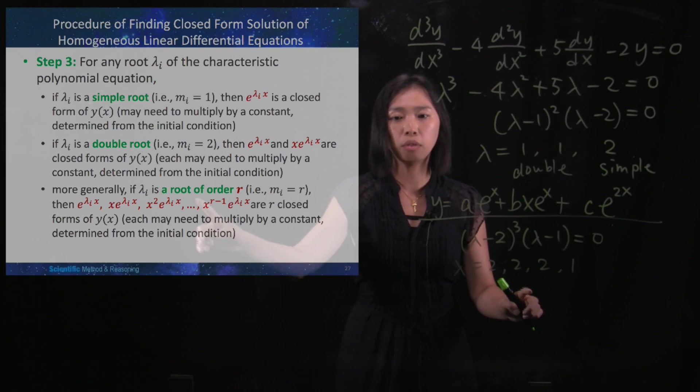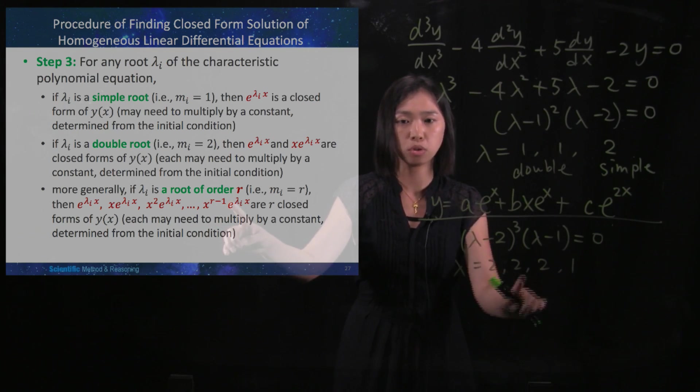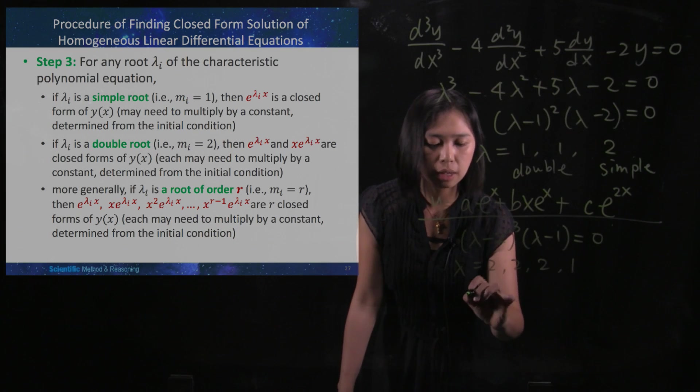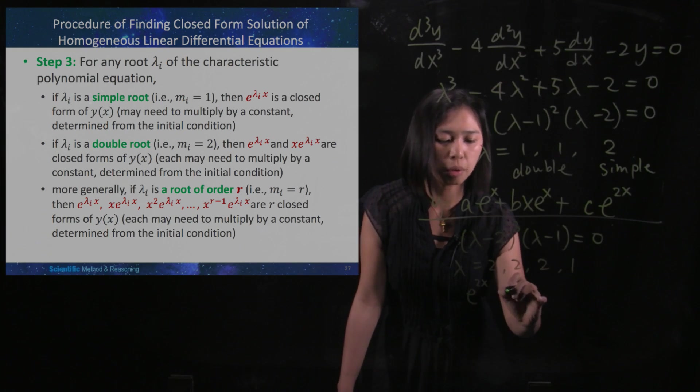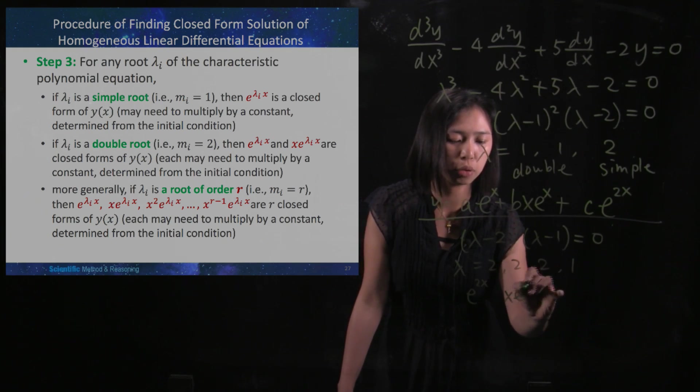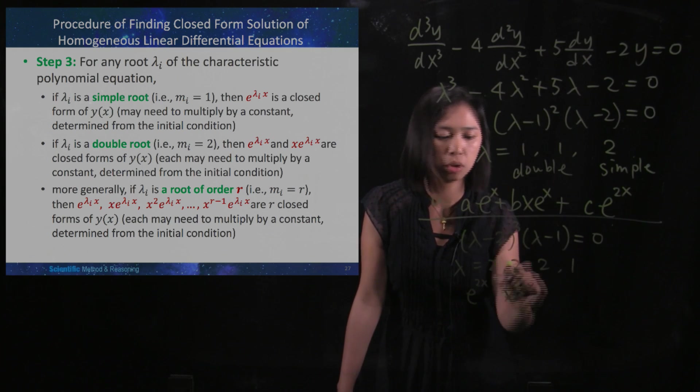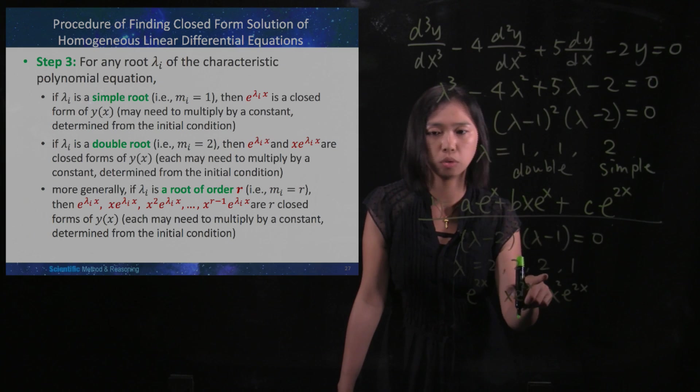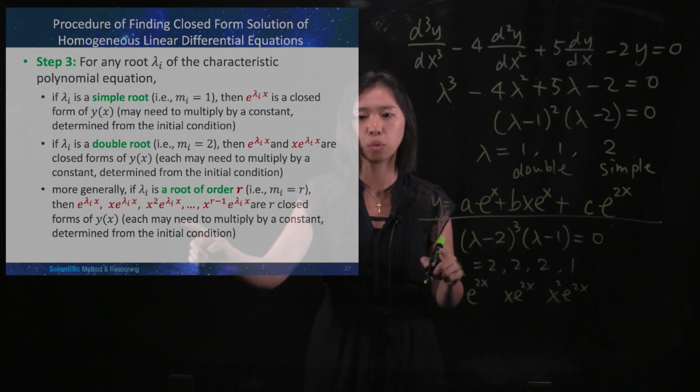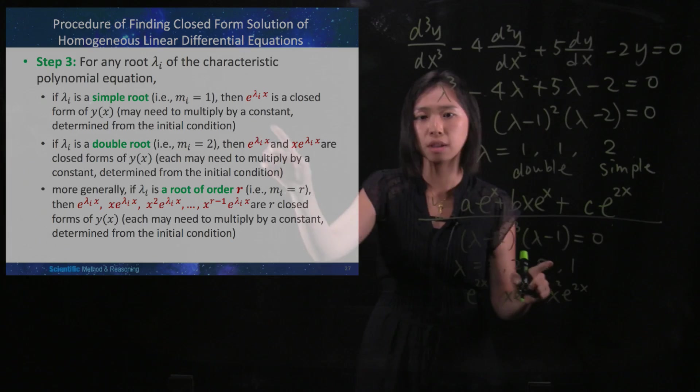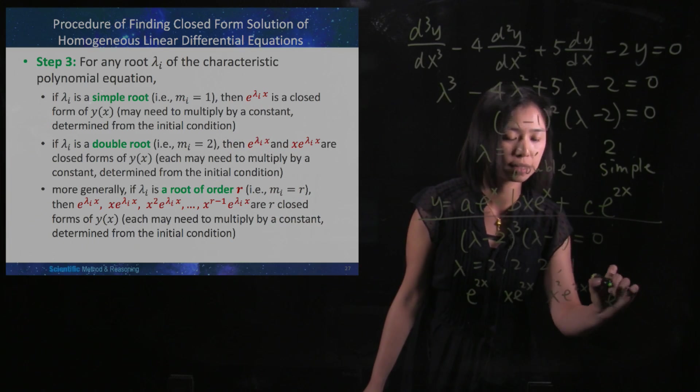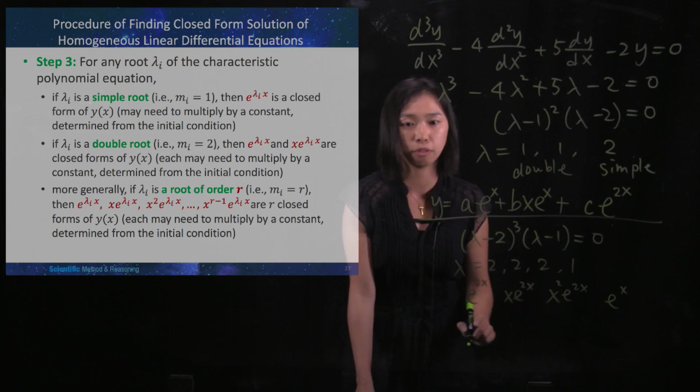So these are a root of order 3 because you got 3 2's here. Then what you would have is e^(2x) corresponding to the first 2, and then you will have xe^(2x) corresponding to the second 2, and then you will have x²e^(2x) corresponding to this 2. So that this is essentially what is written here. And then for this one, since this is a simple root, then you will have e^(1x) without any x in front of it.